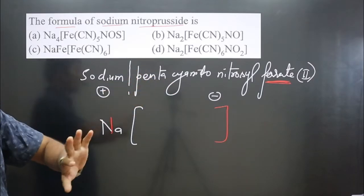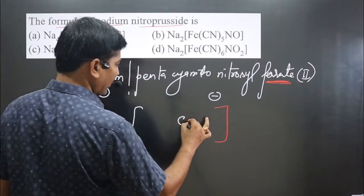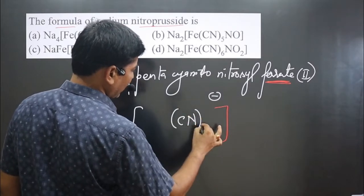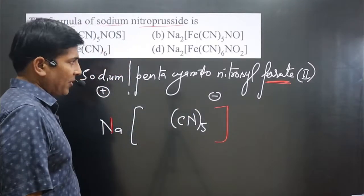Pentacyanido means cyanide ion is given there and how many cyanide ions, five times. So pentas, so this is whole five is there.